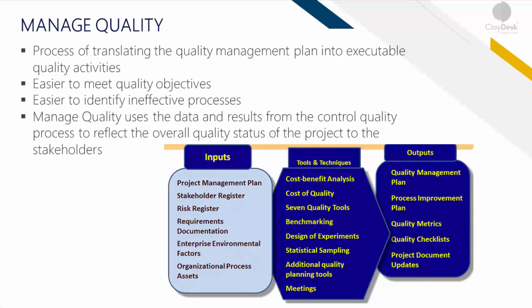Managing quality is the process of translating the quality management plan into executable quality activities, because you can't apply a quality assurance method to the entire project at once. You need to look at each task and activity within your project schedule and decide which activities need to be checked for compliance with standards. The benefit is that it increases the probability of meeting quality objectives and identifying ineffective processes. The managed quality process uses data and results from quality control to reflect the overall quality status of the project to stakeholders, and can be applied at any stage.